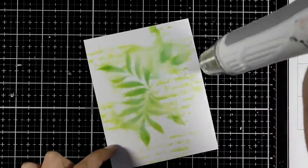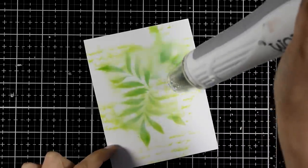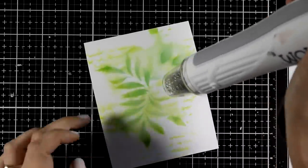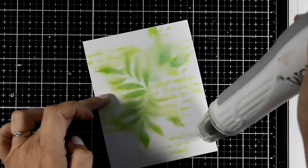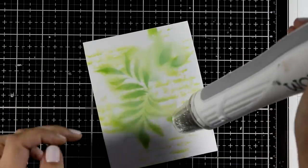The more water you add, the more the ink is going to move. It really depends on you on how loose you want this to look. You can definitely leave it aside to dry or just use your heat gun like I'm doing here.